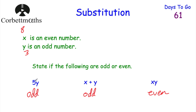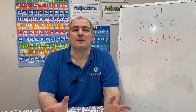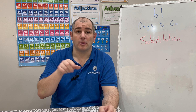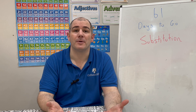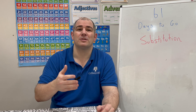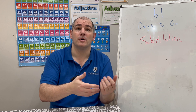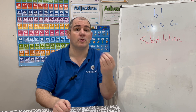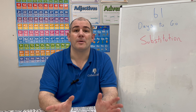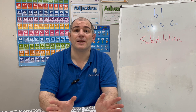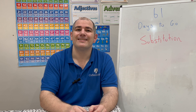So 5Y is always odd, X plus Y is always odd, and XY is always even. And if you got those, well done. In this video we've looked at substitution, which is a very important topic. There are practice questions linked in the description below. Substitution is also useful for drawing graphs — for example substituting X into Y equals 7X plus 1 — and for simultaneous equations. Keep up the hard work, and I'll see you tomorrow at 3 o'clock on YouTube for the next GCSE revision video.